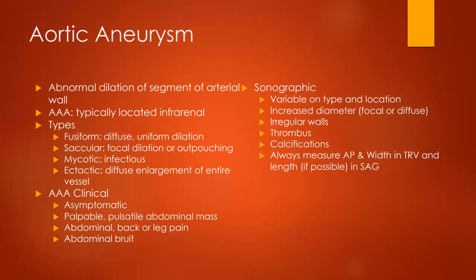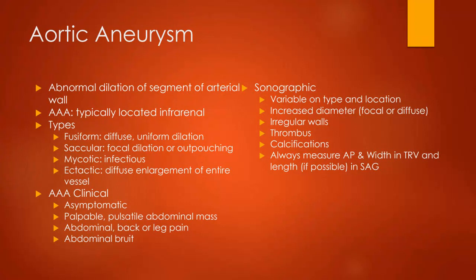Next we'll talk about aortic aneurysms. There are several different types, and there's also something called a pseudoaneurysm — a false aneurysm — which is just as important and scary. Any type of aneurysm is when we have abnormal dilation of a segment or an entire artery — that artery is wider than it should be. As it gets wider, it causes the vessel walls to stretch, weakening the muscles of that arterial wall, and we are more prone to rupture because of that. We follow aneurysms very closely.